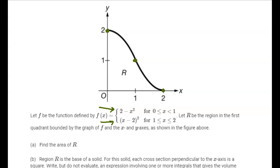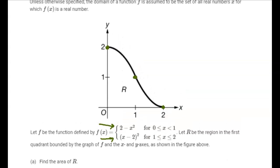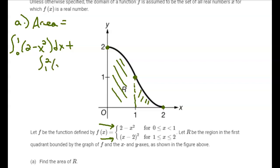First we want to find the area of that region. Since it's defined piecewise, I'm going to use two integrals. The first integral from 0 to 1, I'll use that first piece, 2 minus x squared dx, plus the second piece on the interval from 1 to 2, x minus 2 squared dx.